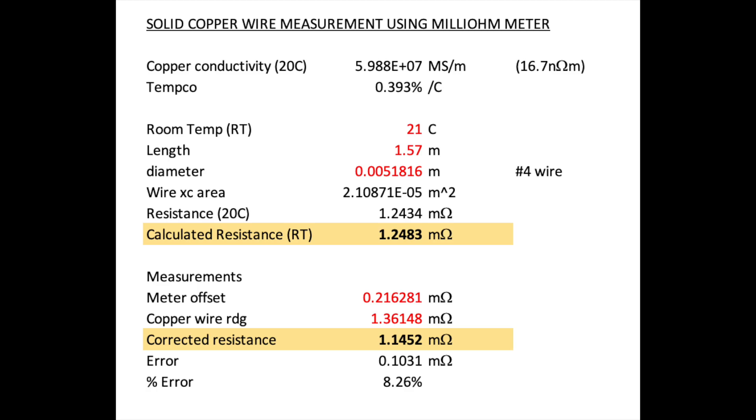So here are the results of the measurements I did on this long piece of solid copper wire. To recap some of the information required to do the calculation: the copper conductivity is the main thing, which is assumed 16.7 nano-ohm meter, which works out to 59.88 megasiemens per meter. Tempco is 0.393% per degree centigrade. The room temperature was 21, nominal temperature is 20 degrees Celsius for this tempco. Length is 1.57 meters.